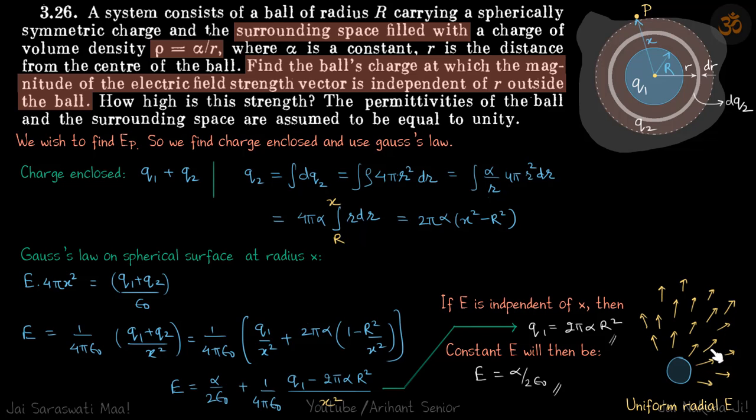In sheet we have seen the uniform electric field, but that was linear. Here we have radial uniform electric field.